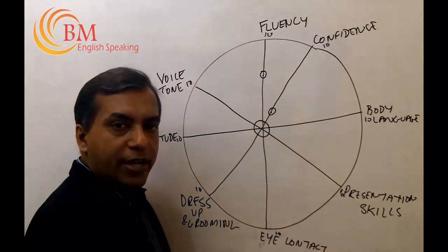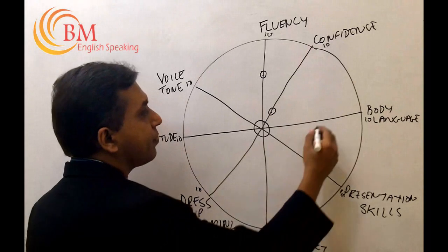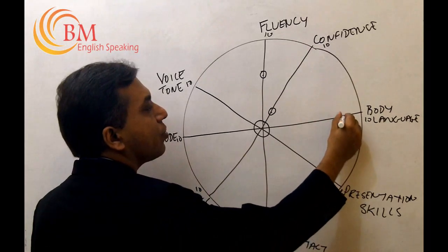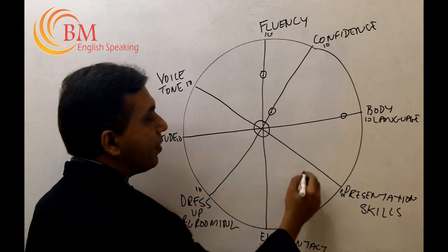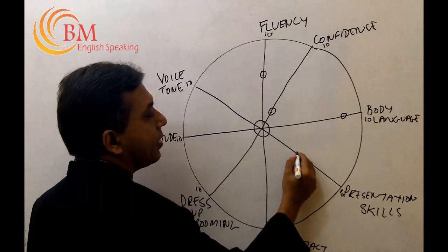Let's say you rate your body language at eight. So you draw a dot and a circle at eight. Same way, rate your presentation skills. Let's say it is five.